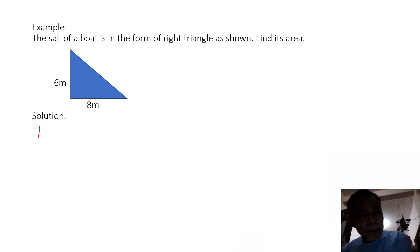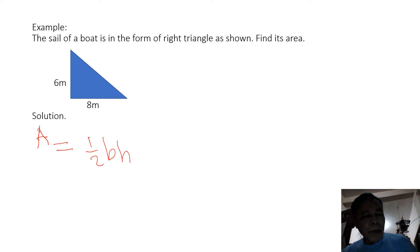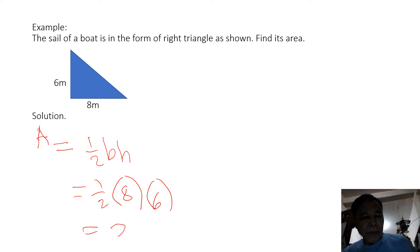So let us take the example. The sail of a boat is in the form of a right triangle. Find the area. Do not use Hero's formula because only the altitude and the length of the base is given. So the area equals one-half B times height, where the height is 6. The area is 24 meters squared.